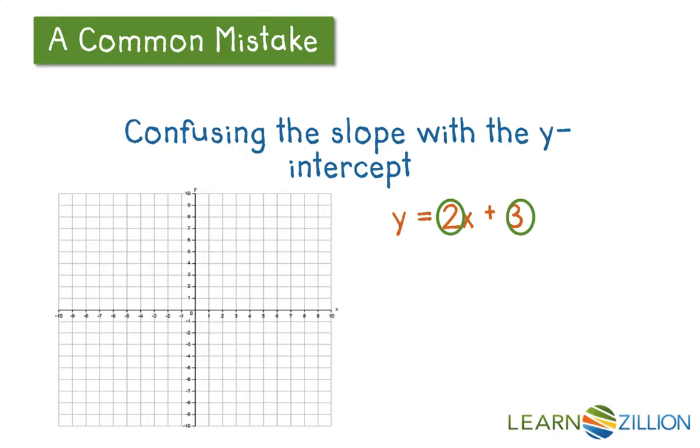And if we were going to graph this y equals 2x plus 3, it would look like this. We start at the point of 0, 3 on our y-intercept, and then we increase up 2 and over 1 for every point that we graph.